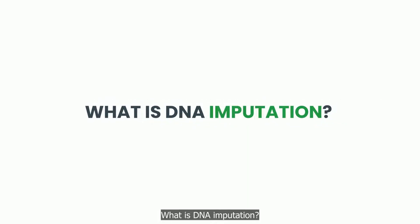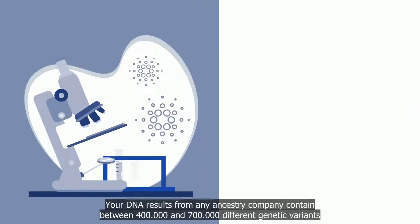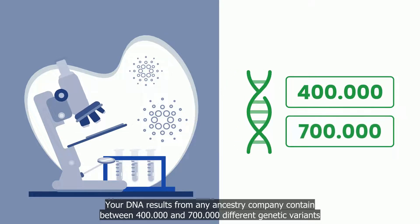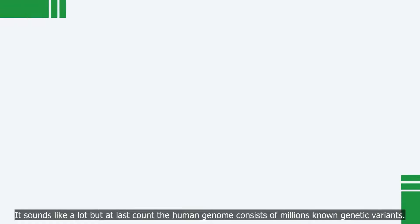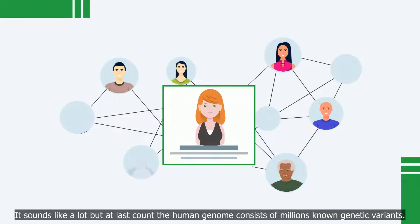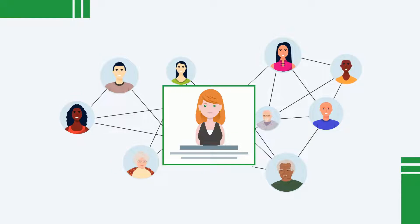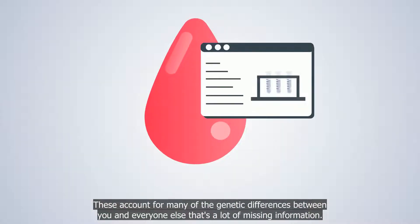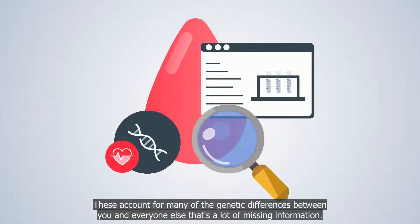What is DNA imputation? Your DNA results from any ancestry company contain between 400,000 and 700,000 different genetic variants. It sounds like a lot, but at last count the human genome consists of millions of known genetic variants. These account for many of the genetic differences between you and everyone else — that's a lot of missing information.